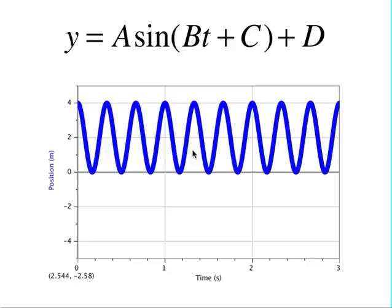Where a is the amplitude, b is determined by frequency, c is the horizontal or phase shift, and d is the vertical shift.